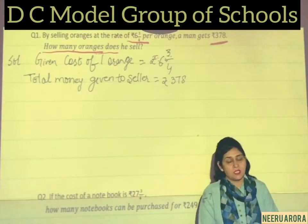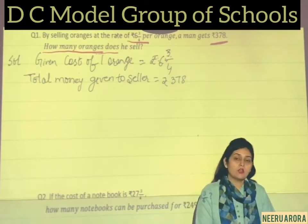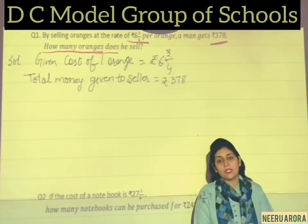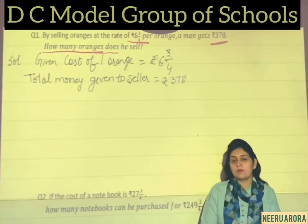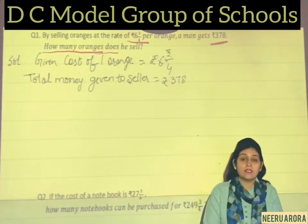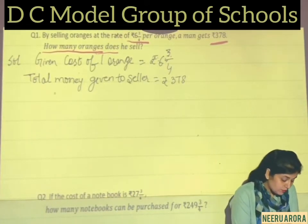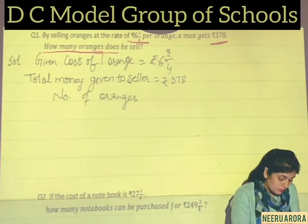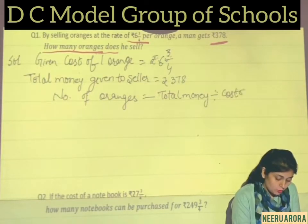Suppose you have Rs. 10 and you want to buy candies, and the price of 1 candy is Rs. 2. So how many candies will you get? 10 divided by 2 is 5, so you will get 5 candies. In the same way, we can find the number of oranges by dividing the total money by the cost of 1 orange.